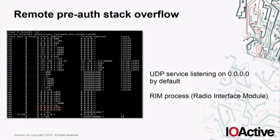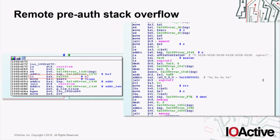We can see there are several ports, like UDP port 3799 listening on all IP addresses — this is the RIM process, the Radio Interface Module. We're going to see a remote pre-authenticated stack overflow in this service, but this particular one only affects older versions of the firmware. I wanted to share it anyway because it seems they tried to fix it but made another mistake, as we'll see shortly.